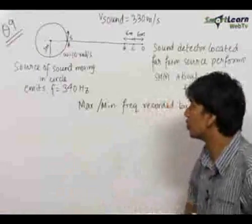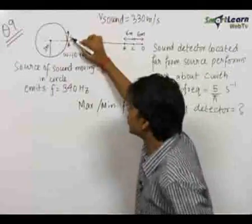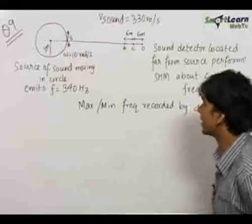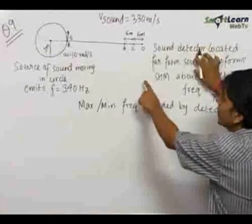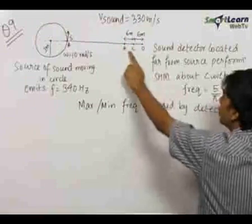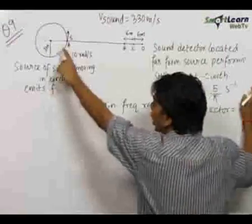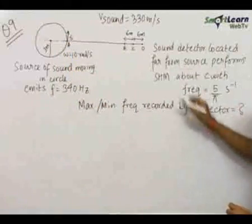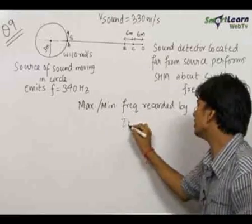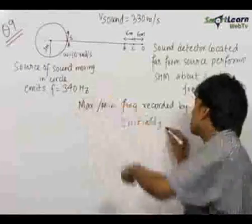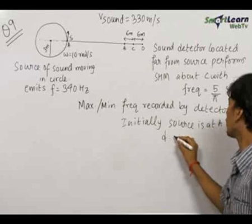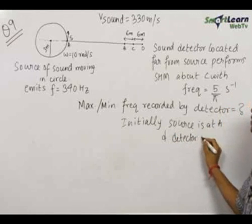The 9th question is a very important and conceptual problem. A sound source is moving in a circle of radius 3 meters with angular velocity equal to 10 radians per second. A sound detector is located far away along a line and is performing SHM with amplitude 6 meters about point C. The frequency of SHM and the frequency of sound emitted by the source are given, along with the velocity of sound. We need to find the maximum and minimum frequency recorded by the detector, given that initially the sound source is at A and the detector is at B.